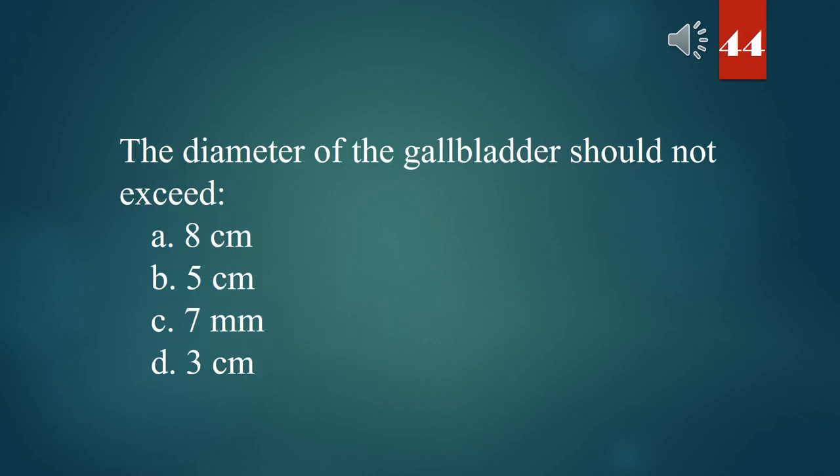The diameter of the gallbladder should not exceed: A. 8 cm. B. 5 cm. C. 7 mm. D. 3 cm. The answer is B. 5 cm.